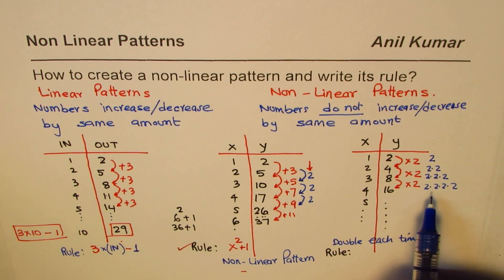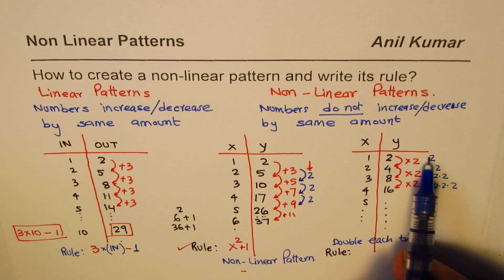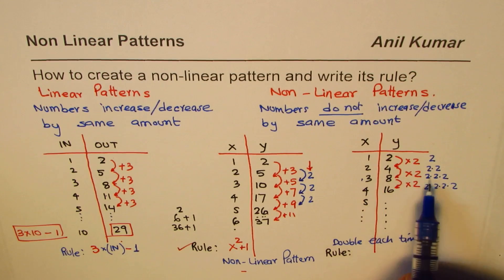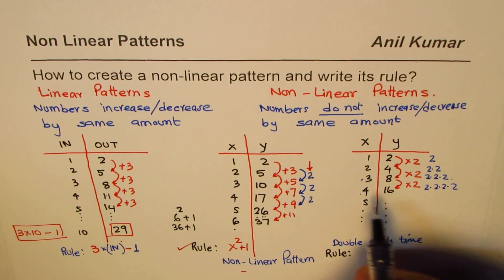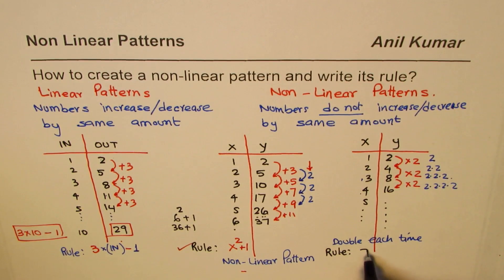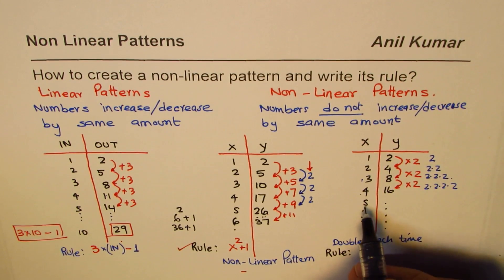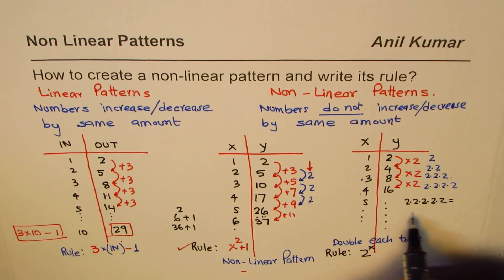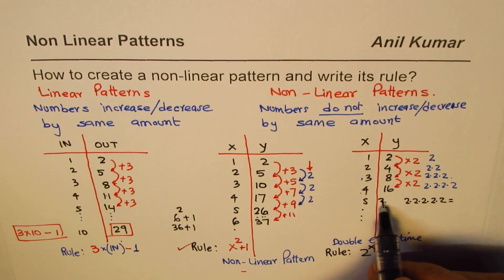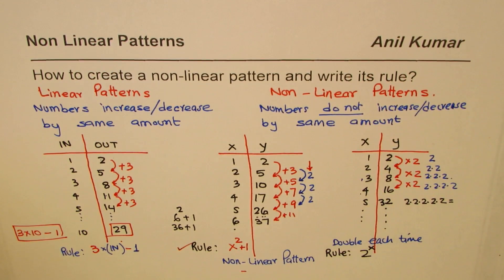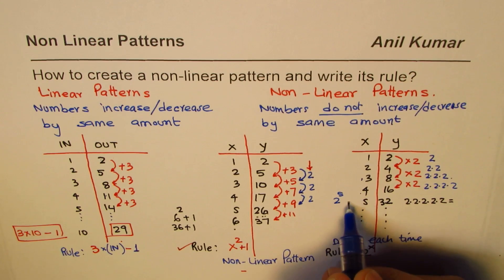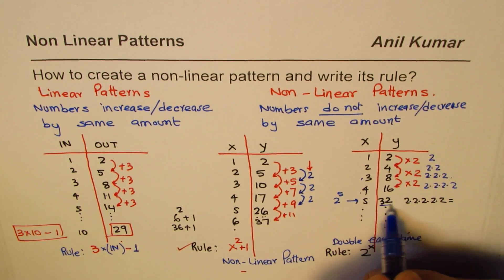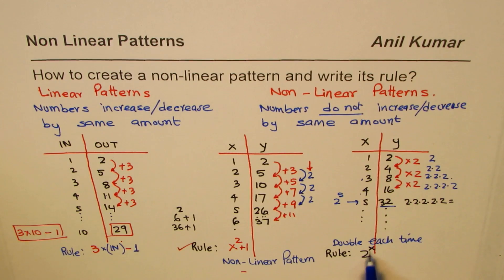So the rule is two to the power of x. For x equals five: two to the power of five is two times two times two times two times two, which equals thirty-two. This can be written as 2^x, where x is the input value.